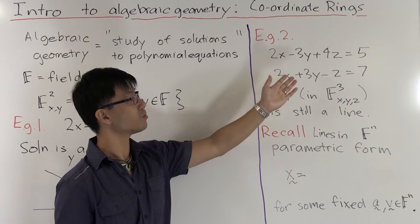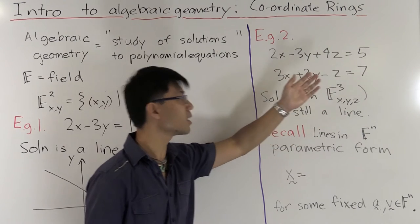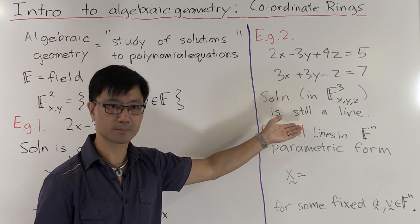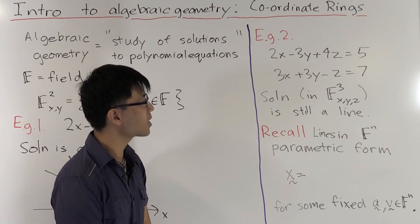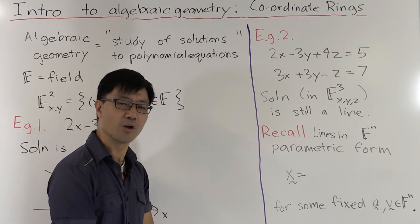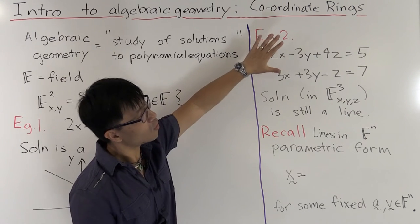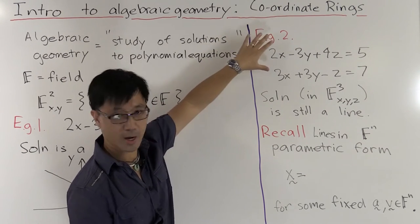Again, we know the answer from linear algebra as to what the simultaneous solutions to these two equations are. The solution, which now lives inside F³, the sets of triples in x, y and z, is still a line.